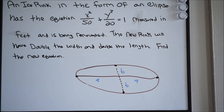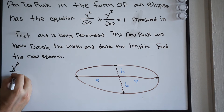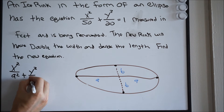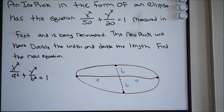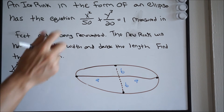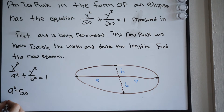Here is our equation. Let's write out the equation for a horizontal ellipse: x squared over a squared plus y squared over b squared equals 1. This is my equation for a horizontal ellipse. Knowing that, my a squared value is 50 and my b squared value is 20.